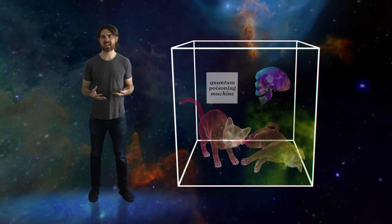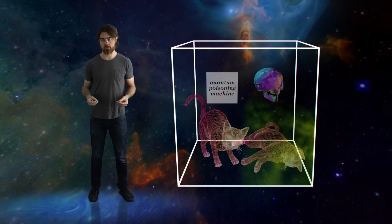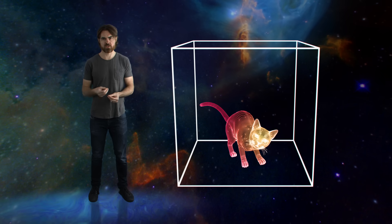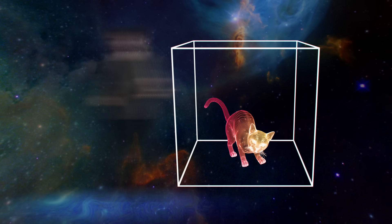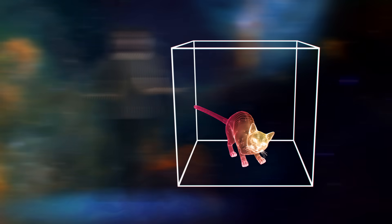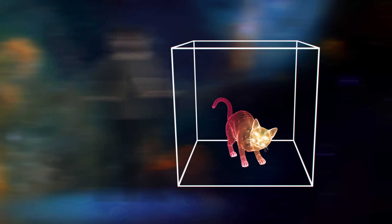But why can't the cat collapse its own wave function? And from its point of view, is the physicist outside also a quantum blur until the box is opened? And what about the entire rest of the universe that's not currently being observed by physicists or cats?